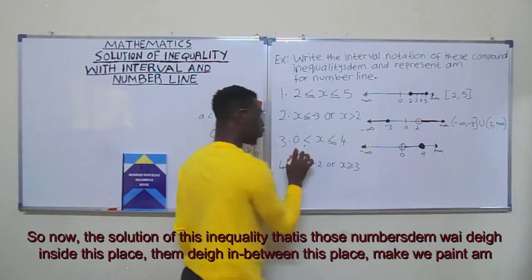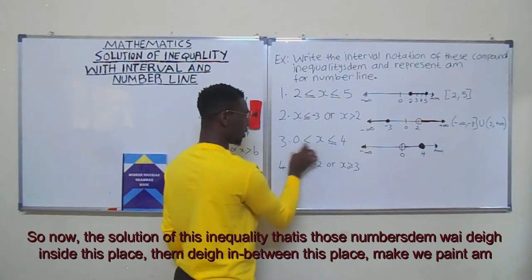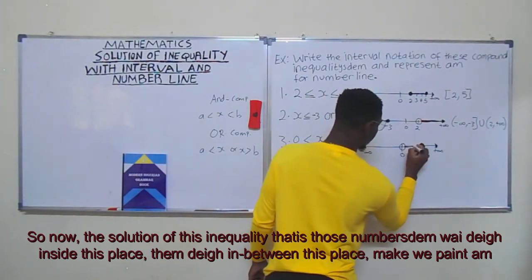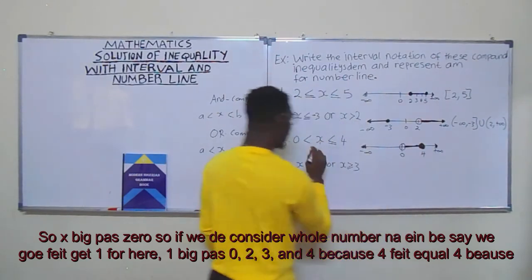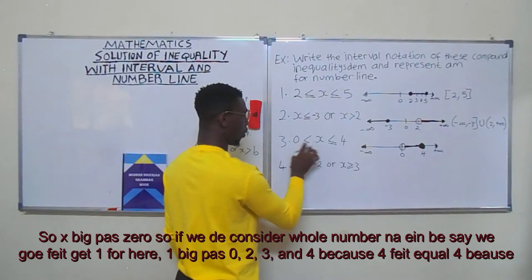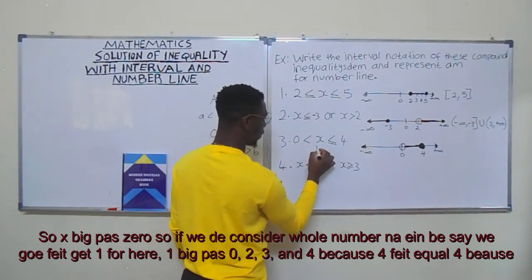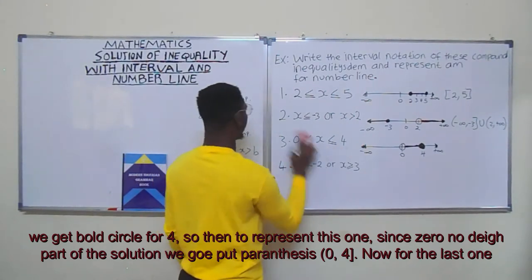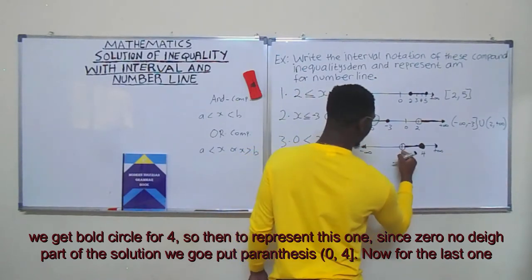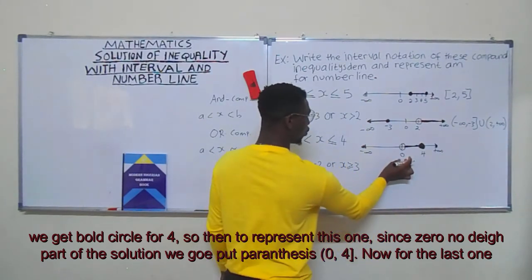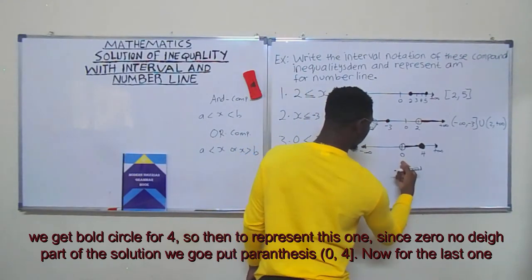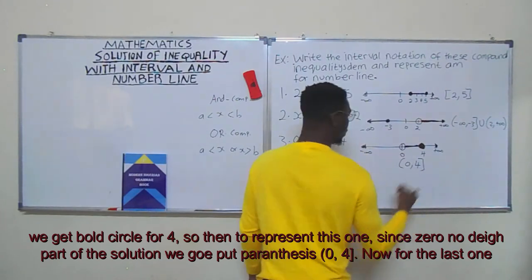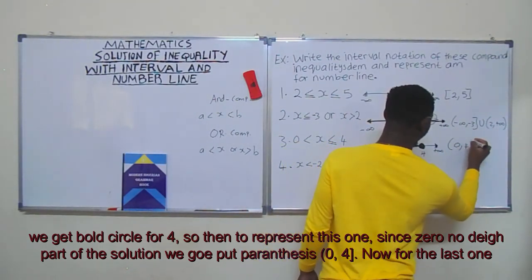The solution is those numbers in between. Since x is greater than zero, considering whole numbers: one, two, three, and four — because four equals four and we have a closed circle for four. To represent this in interval notation: since zero is not part of the solution we use a parenthesis, and since four is part of the solution we use a bracket. So the interval notation is (0, 4].